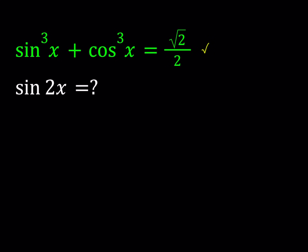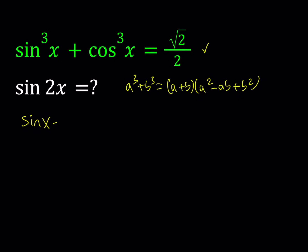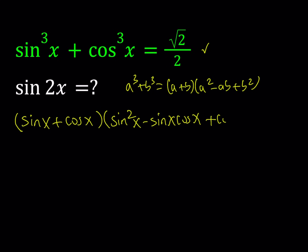This expression is a sum of two cubes, so I'm going to be using the formula a cubed plus b cubed, which is equal to a plus b multiplied by a squared minus ab plus b squared. That's what I'm going to use to factor the original expression. So the first factor is going to be sine x plus cosine x, and the second factor is going to be sine squared x minus sine x cosine x plus cosine squared x.